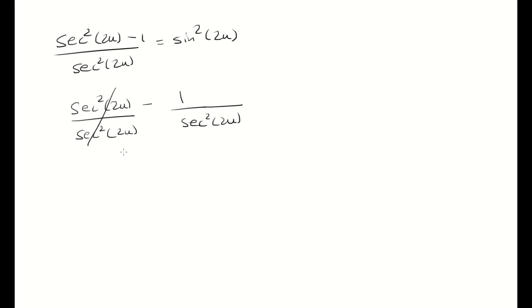Now, secant squared over secant squared is just 1, and then we have 1 over secant squared. We know 1 over secant is 1 over 1 over cosine, which is cosine.